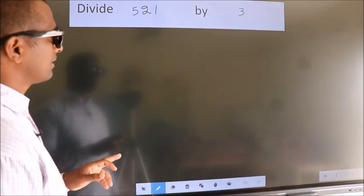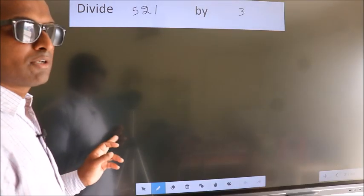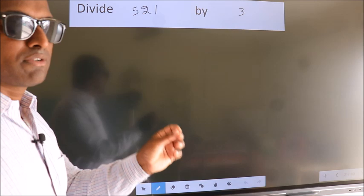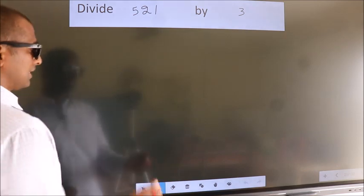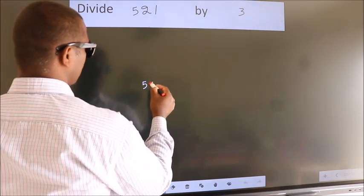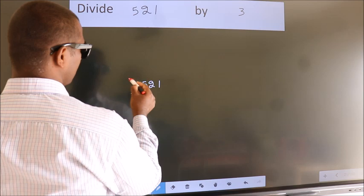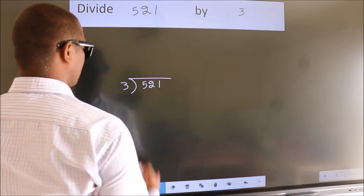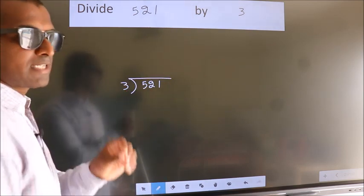Divide 521 by 3. To do this division, we should frame it in this way: 521 here, 3 here. This is your step 1.